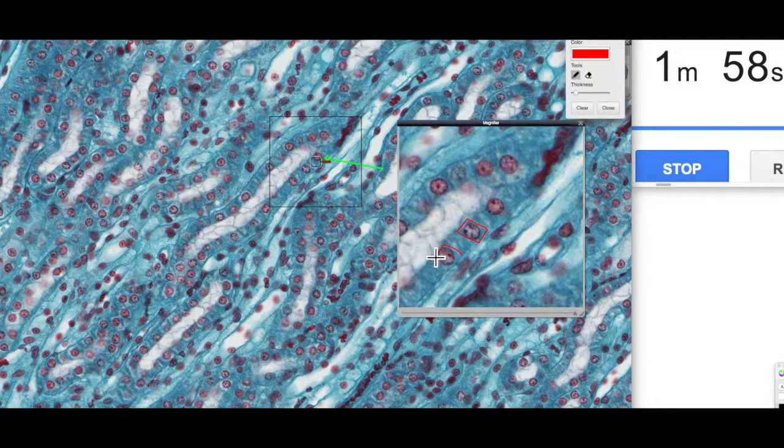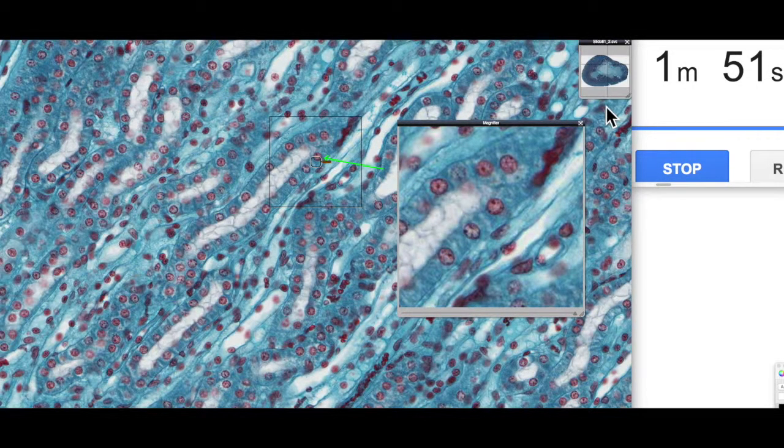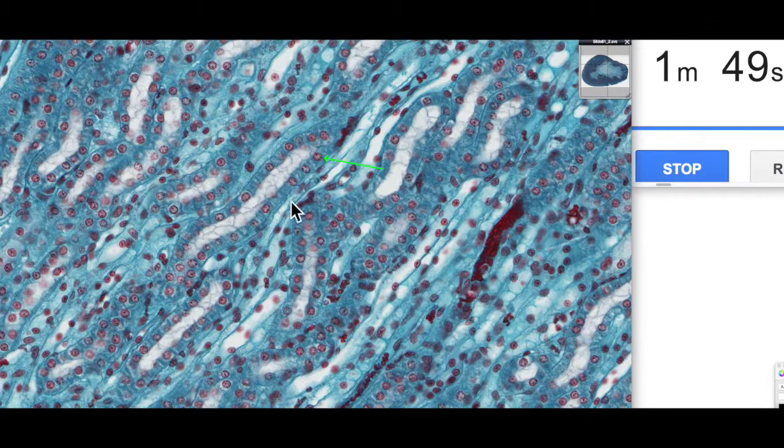You can see them all in a row here. The cells are as tall as they are wide, which is typical of a cuboidal epithelium. That's typical of what we find in the kidney tubules.